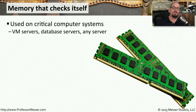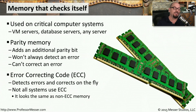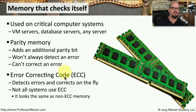Most memory in desktop computers doesn't provide any error checking or correction. But if you have a file server or system used for virtualization, you may want memory that can recognize errors. Parity memory adds an additional parity bit and will detect when an error has occurred, but won't correct it. If you need error detection and correction, you want ECC memory — error correcting code memory. ECC, parity, and non-parity memory all look similar, so check the specifications and use the right type for your motherboard.